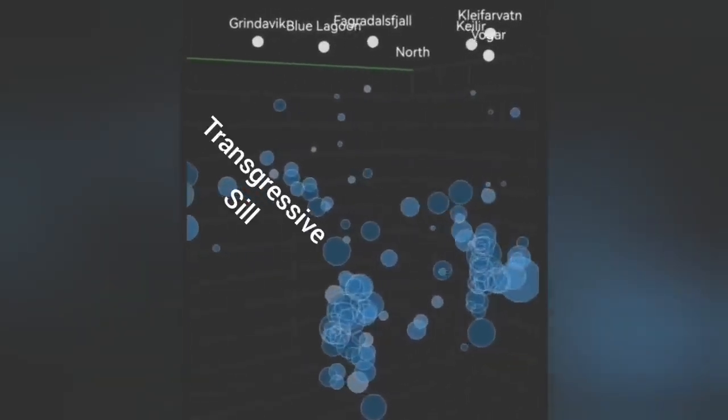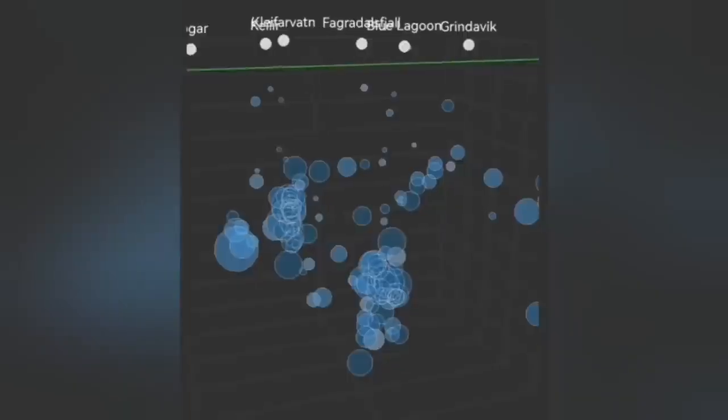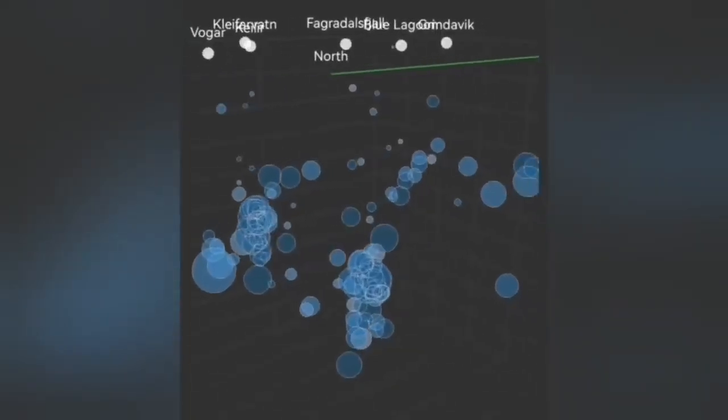We call it a transgressive sill in geological terms, a sill which has an angle and rises gradually, but not vertically.